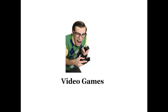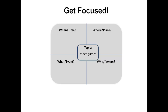Let's say your topic is video games. Video games is a really broad topic, so you'll want to add some focus to it. Use the four W's to get focused. If you want to find information from within the last ten years, this will respond to the when aspect of your topic. Where allows you to limit your research by location or geography — let's say you want to focus on the USA. If you are interested in researching whether playing video games influences violent behavior, violence will fill the what category. The who aspect of your topic will allow you to identify the person or population you would like to study — we'll use children for this example.